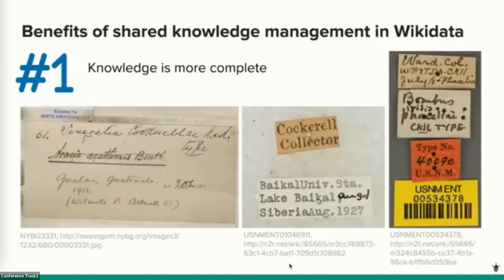Much collections work focuses on the what, where, and when of a specimen rather than the collectors or other people involved. But knowing individuals can potentially fill in knowledge gaps for the specimens themselves. For instance, knowing an individual's active collection dates at a particular museum might help constrain specimen collecting dates when they are not otherwise known.